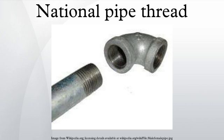Commonly used sizes are 1/8, 1/4, 3/8, 1/2, 3/4, 1-1/4, 1-1/2, and 2 inch, appearing on pipes and fittings by most U.S. suppliers. Sizes smaller than 1/8 inch are occasionally used for compressed air, while sizes larger than 2 inches are uncommon due to the use of alternative methods of joining used with these larger sizes.